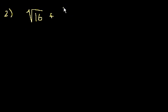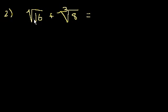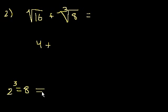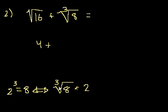Problem 2. They say the square root of 16 plus the cube root of 8 is equal to what? The square root of 16 — when written this way it means the principal root, so it's just plus 4. They would write a plus or minus out front if they wanted the negative square root. Now, what to the third power equals 8? 2 to the third is 8, so the cube root of 8 is 2. Therefore 4 plus 2 equals 6, and that is choice B.